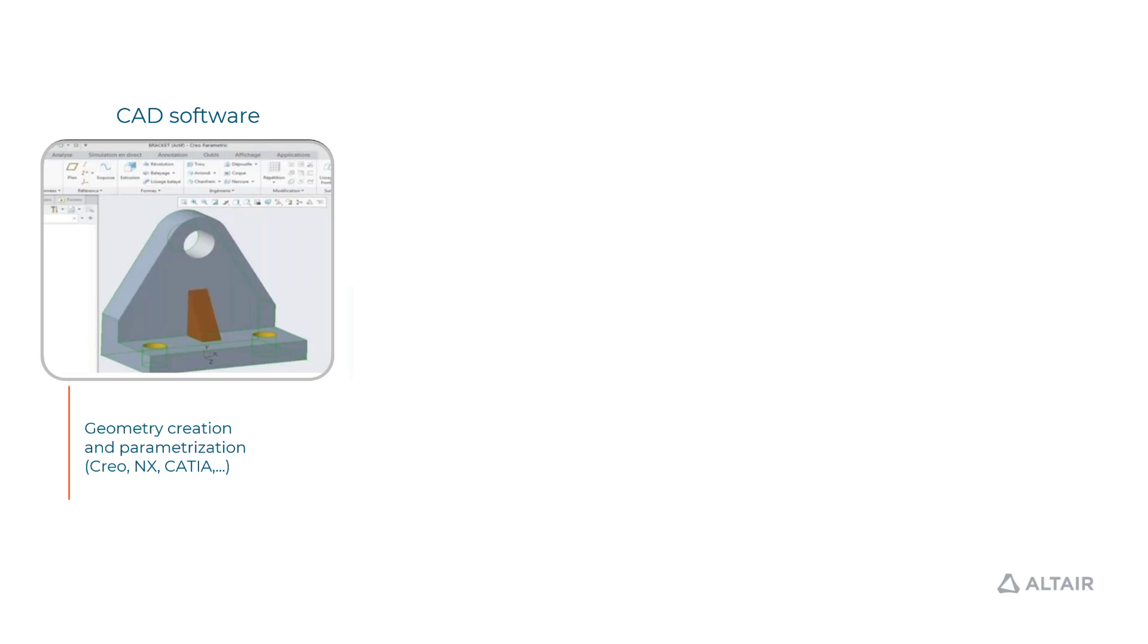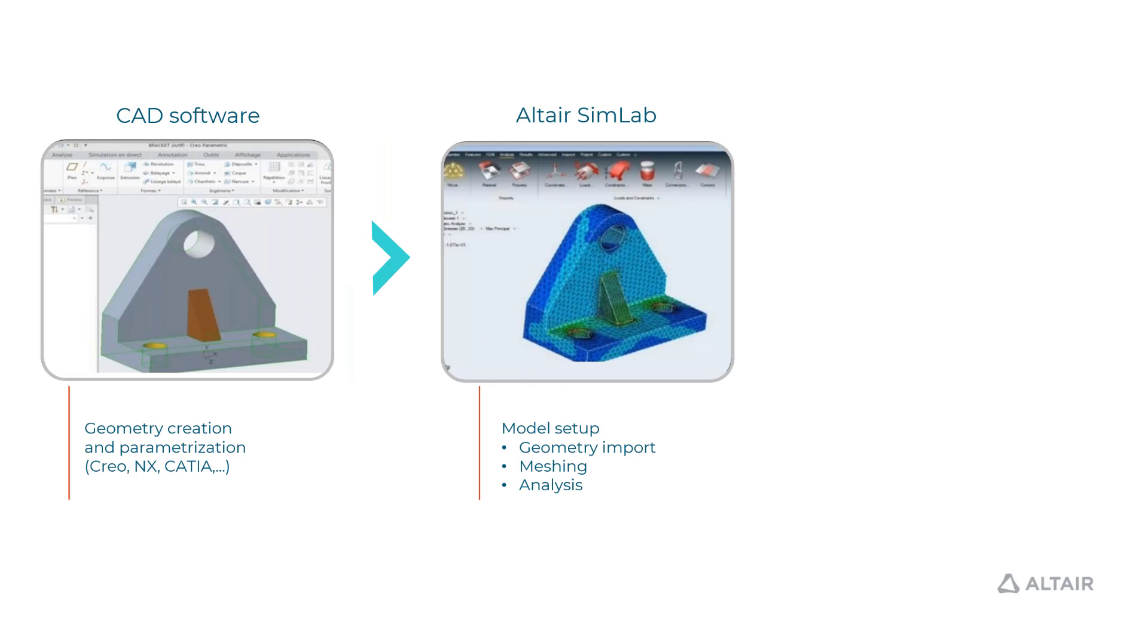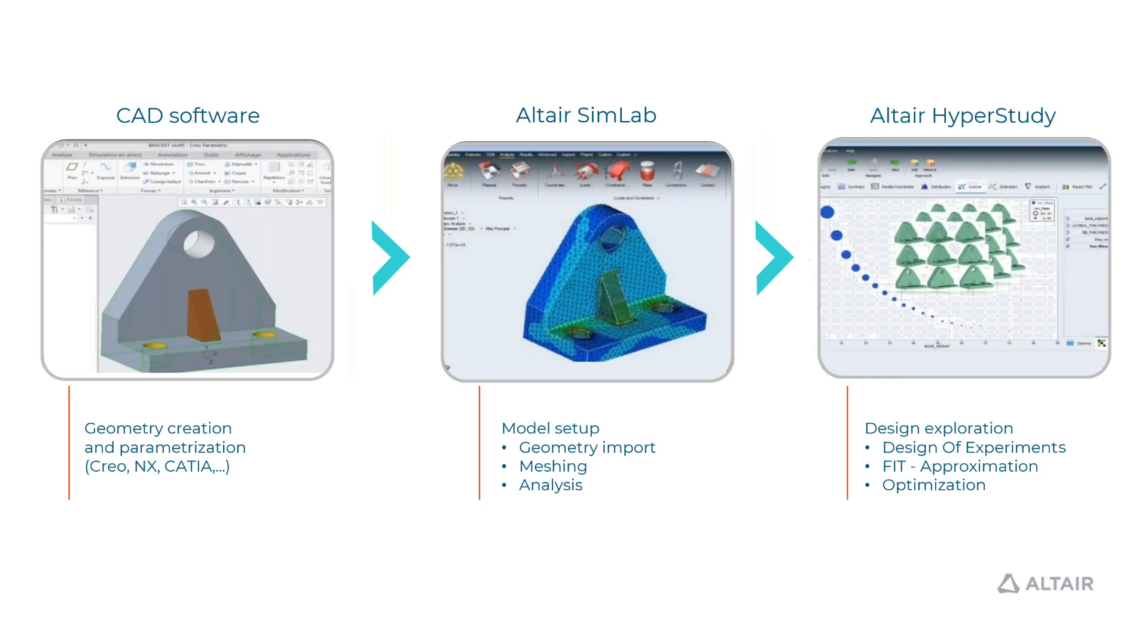It has bidirectional associativity with that. Second is how do you set up a model in Simlab. You create a Python script or a JSON script, preferably a Python, and once that model setup is done, step three would be connecting these three in Hyperstudy and driving the design exploration step that would include either a DOE setup or a fit or an optimization.